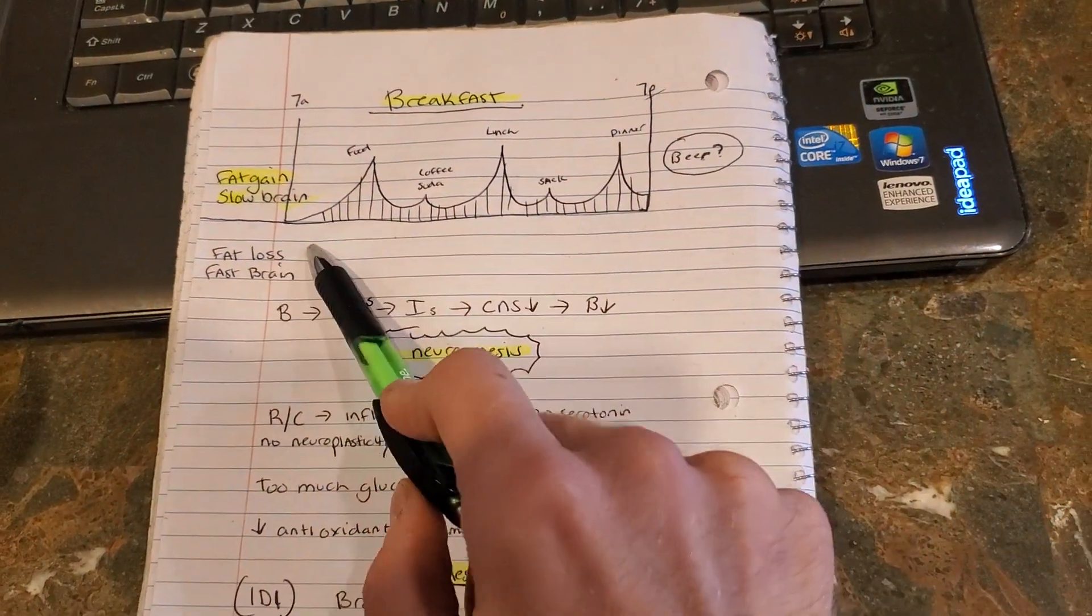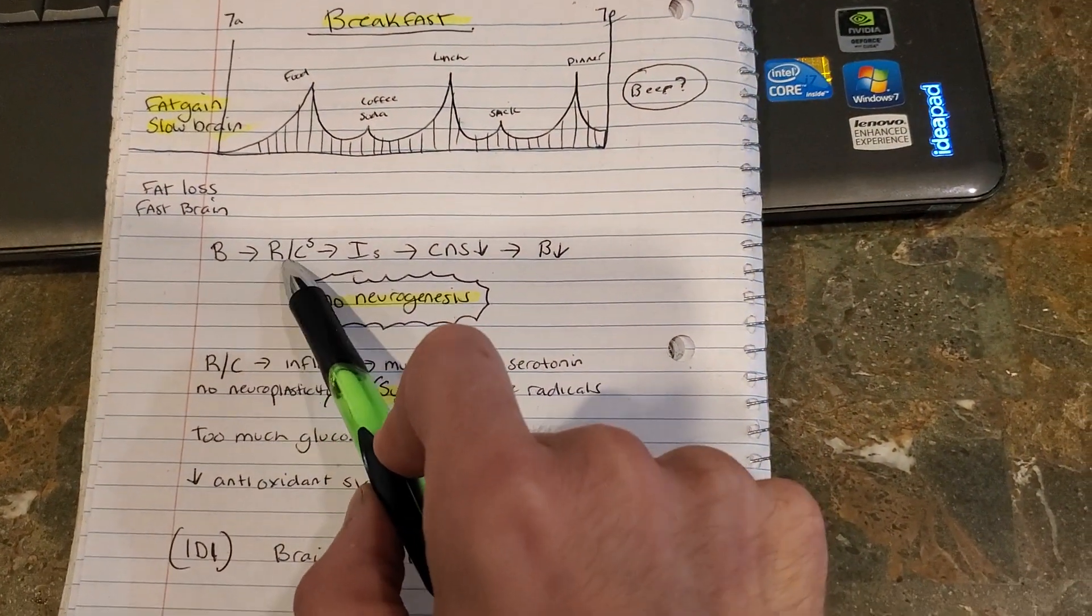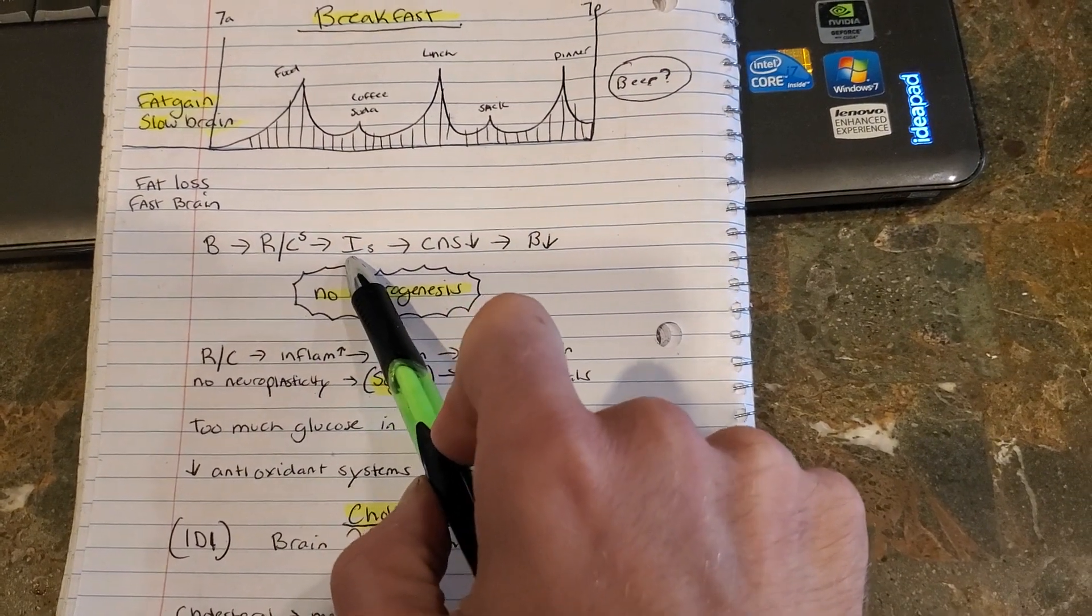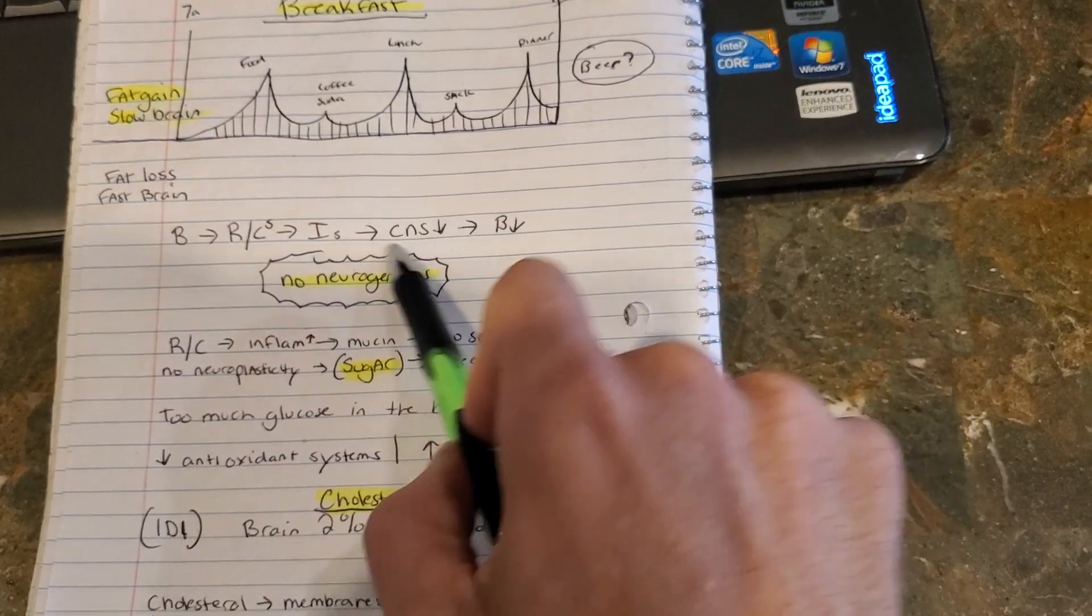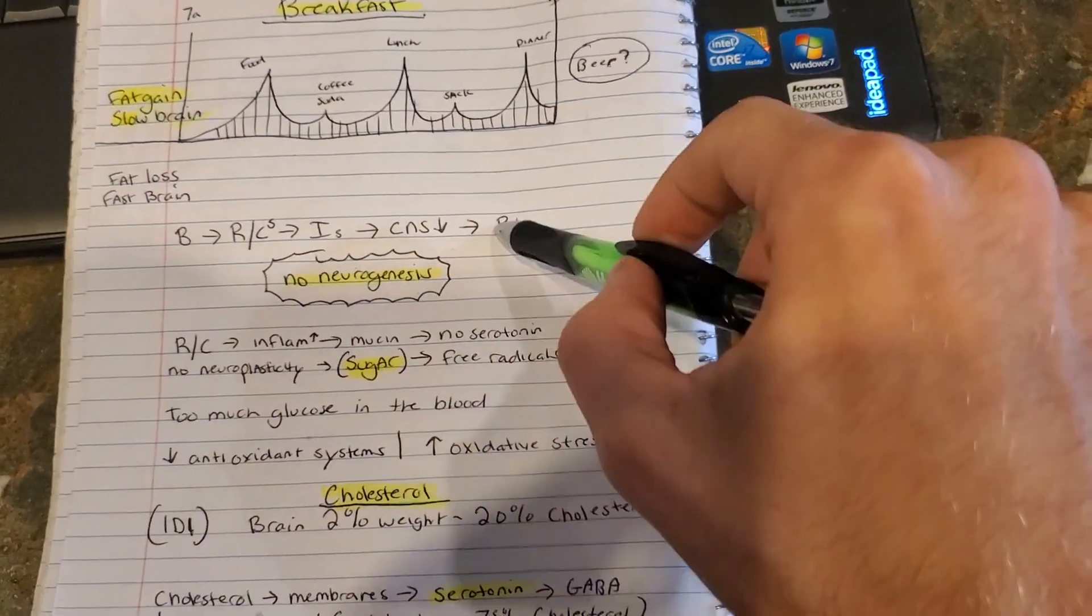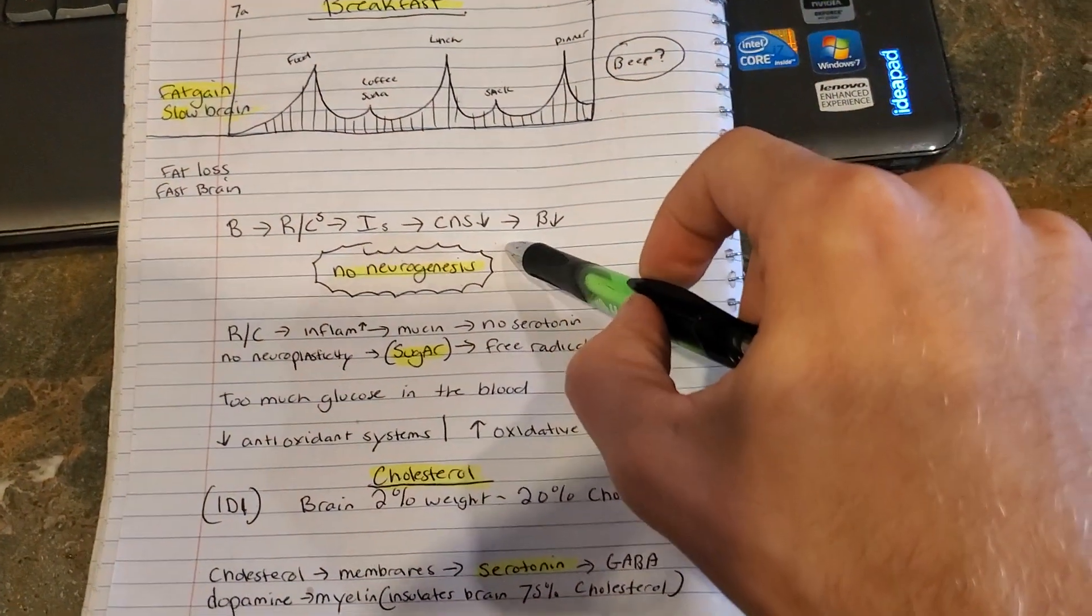So fat loss equals fast brain, right? So your brain function and refined carbohydrates, you have insulin. So that is what is spiking right here. Your insulin is preventing your CNS, that's your brain growth, goes down. Brain function down, no neurogenesis.